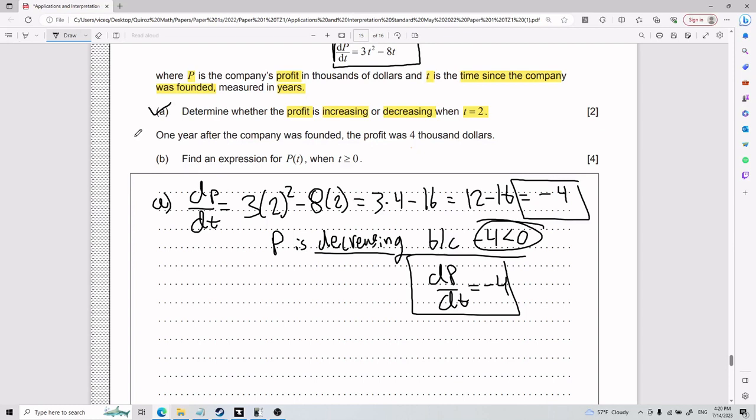Then it tells us that one year after the company was founded, the profit was four thousand dollars. Part B: Find an expression for P(t) when t is greater than or equal to 0.